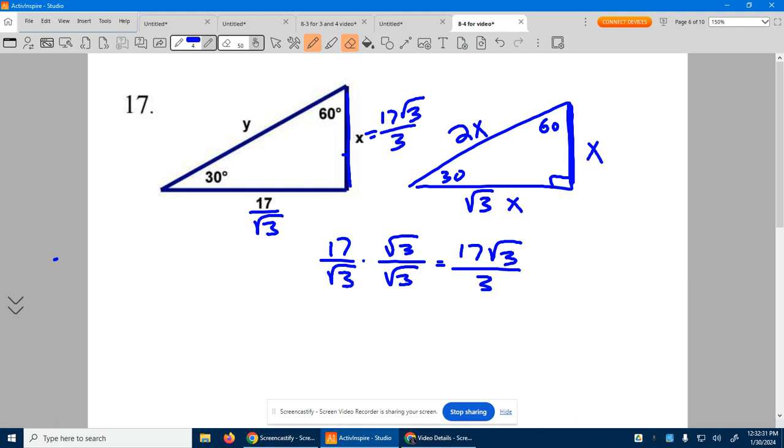Now the hypotenuse is going to be twice that. So if you multiply this 17 root 3 by 2 over 1, you're just multiplying the 17 and the 2, which is 34. The root 3 stays and the denominator stays 3. So there you have it, 34 root 3 over 3. Ugly, but that's exactly what it is.